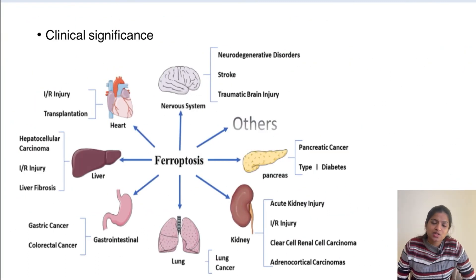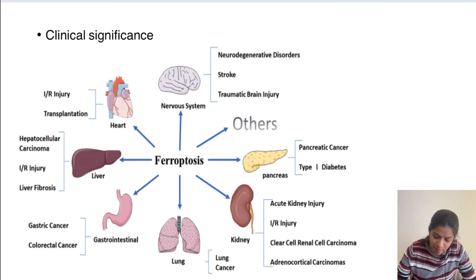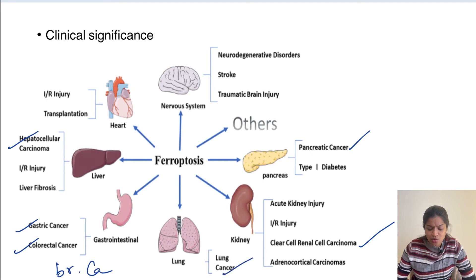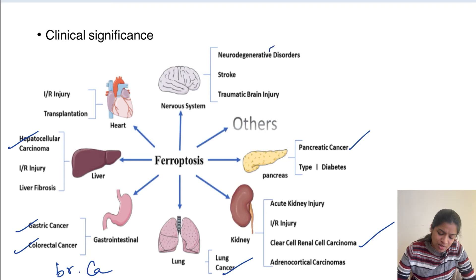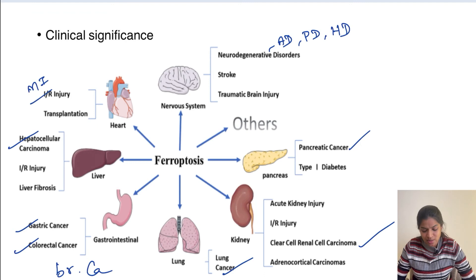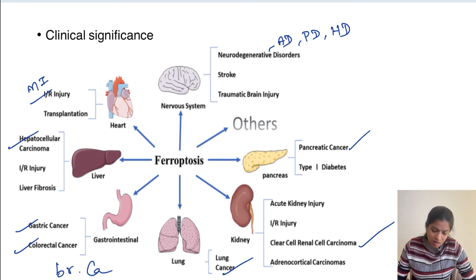Clinically, ferroptosis has been implicated in various cancers including pancreatic cancer, renal cancer, hepatocellular cancer, gastric cancer, colorectal cancer, breast cancer, and lung cancer. It is also implicated in neurodegenerative disorders like Alzheimer's disease, Parkinson's disease, and Huntington's disease, as well as myocardial infarction and ischemia-reperfusion injury.